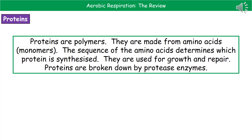The second type of food that you need in your diet are proteins. Proteins are still polymers, but they are made from the monomer amino acids. The sequence of amino acids is going to determine which protein we're actually making. We need proteins in our diet because we use them for growth and repair of our cells. When we consume proteins, they will be broken down by enzymes called protease enzymes.